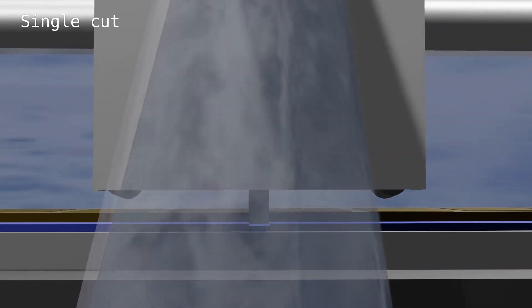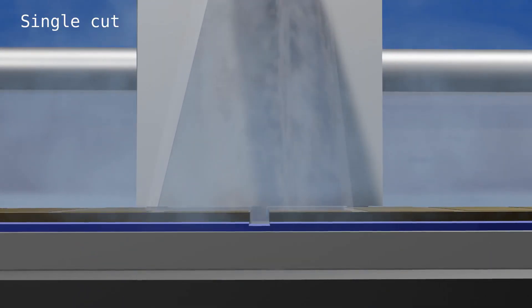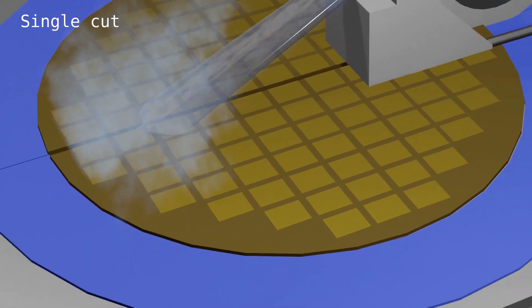The single cut simply involves sawing with a single blade which makes the entire cut, like we show here.